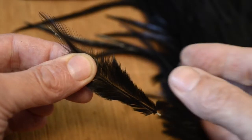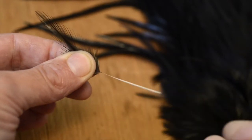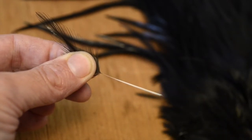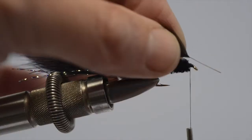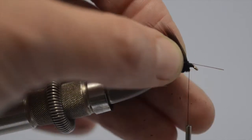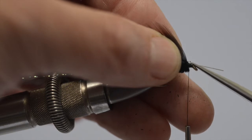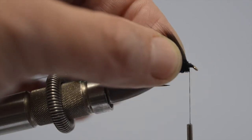The next step is to prepare the hackle. We strip away all the broken fibres from the base of the stem, leaving a short section of stem. And then we just catch it in behind the eye, with a couple of tight thread turns. Take the scissors, just trim off the excess hackle stem.